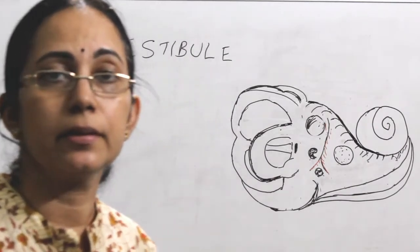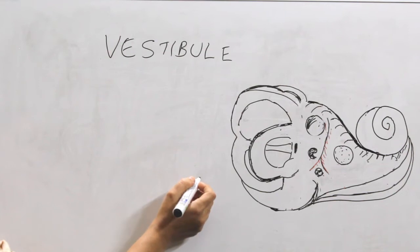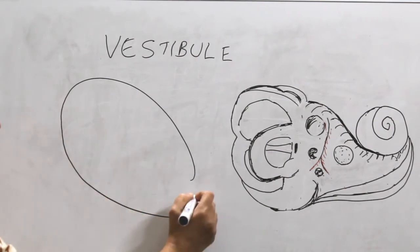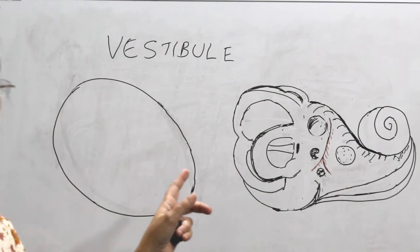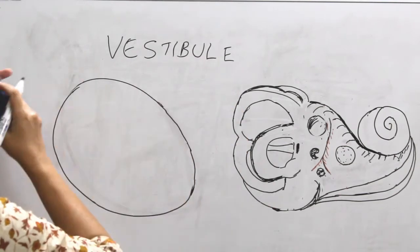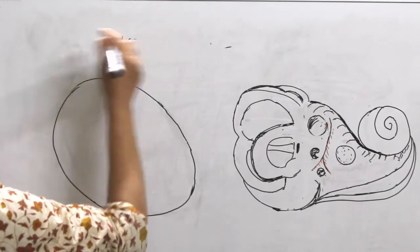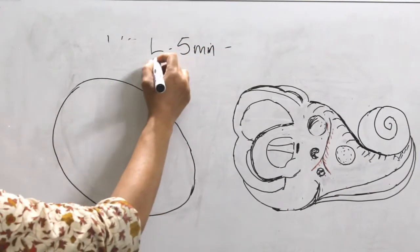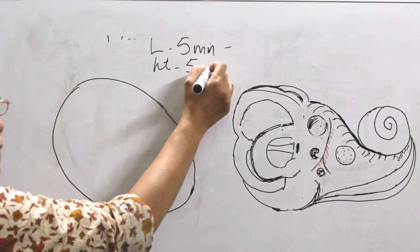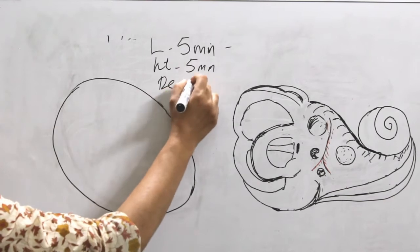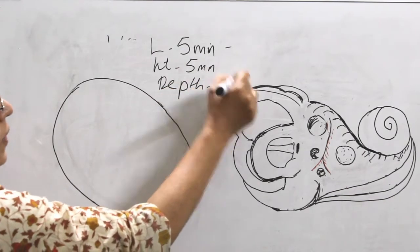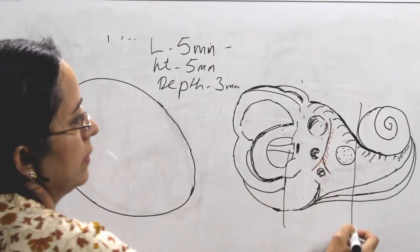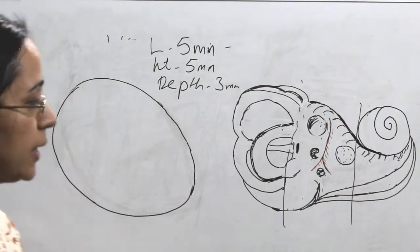The vestibule is a central chamber and can be compared to an ovoid shape — ovoid means egg-shaped. It measures around 5 mm in length, 5 mm in height, and a depth of 3 mm.